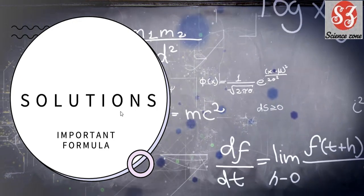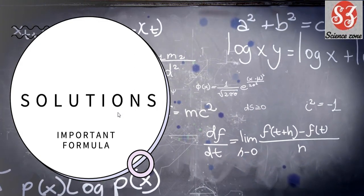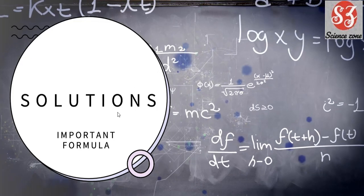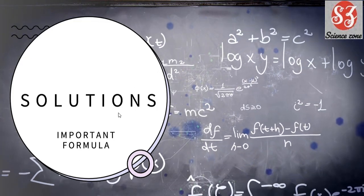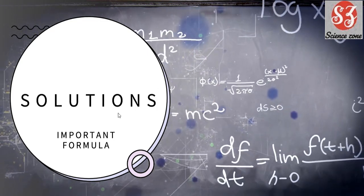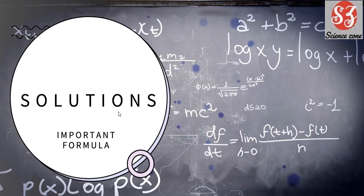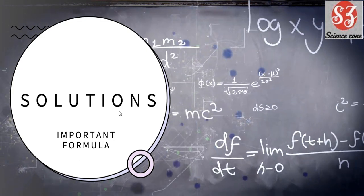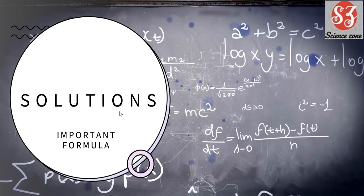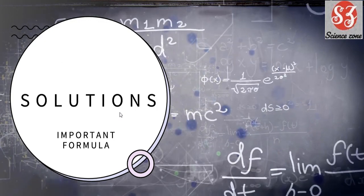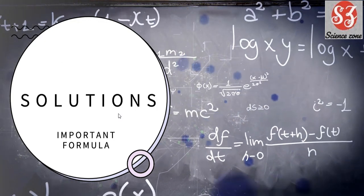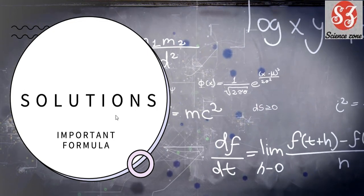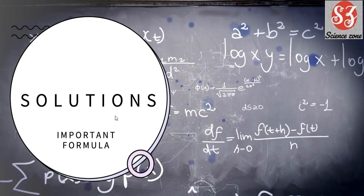Coming to Solutions — some students told me to take the theory part first and then go to important formulae. But these formulas and problems are very scoring because they are straightforward. You don't have to memorize everything individually, just remember all the formulas. After this numerical session, I will take revision in one short — every chapter I will cover in brief.